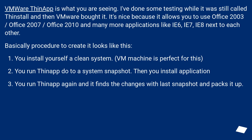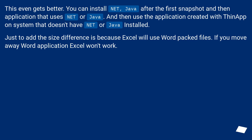Basically the procedure to create it looks like this: you set up a clean system — a VM machine is perfect for this. You run ThinApp to do a system snapshot, then you install the application. You run ThinApp again and it finds the changes since the last snapshot and packs it up. You can also install .NET or Java after the first snapshot and then an application that uses .NET or Java, and then use the application created with ThinApp on a system that doesn't have .NET or Java installed. Just to add: the size difference is because Excel will use Word's packed files — if you move away the Word application, Excel won't work.